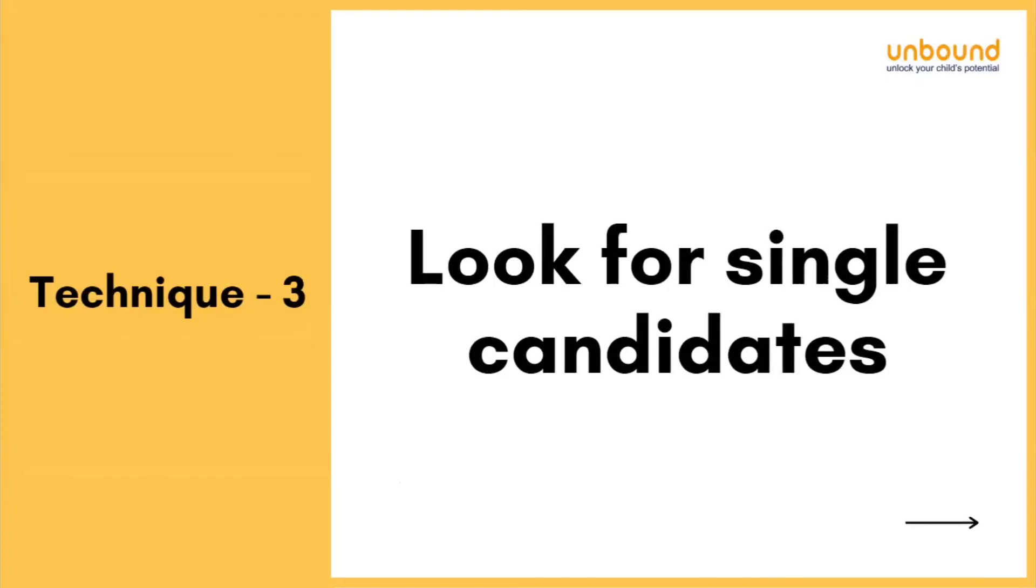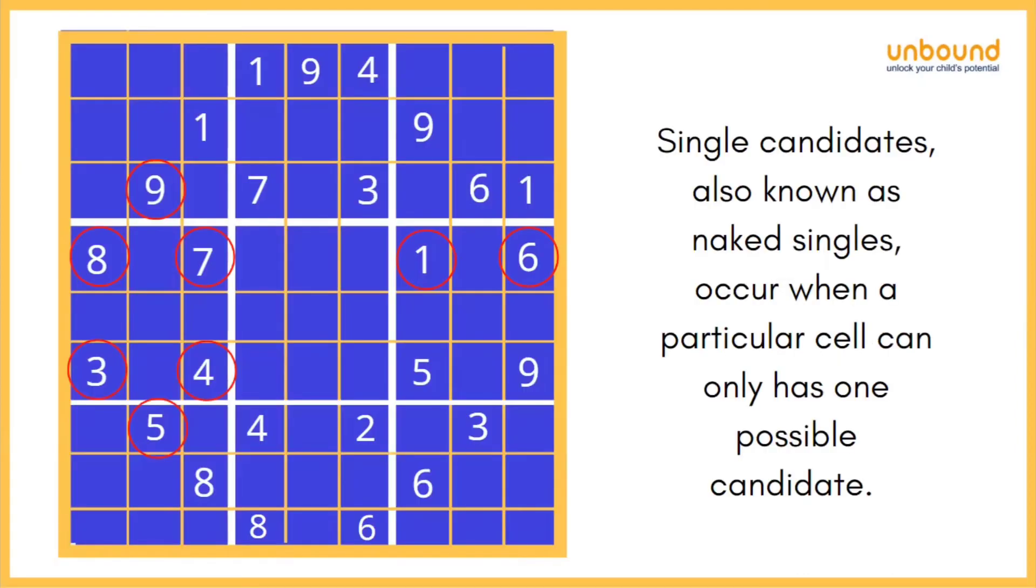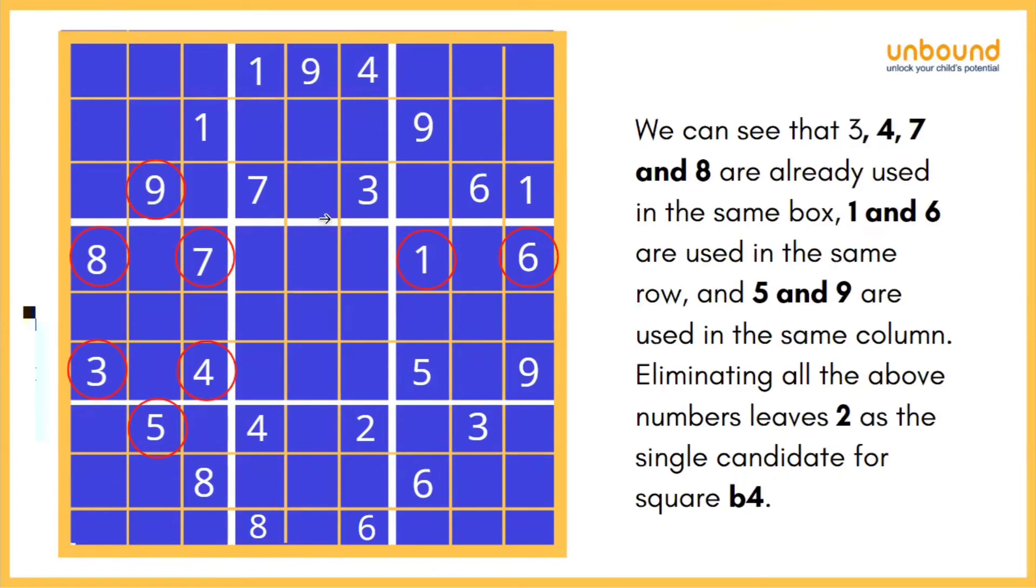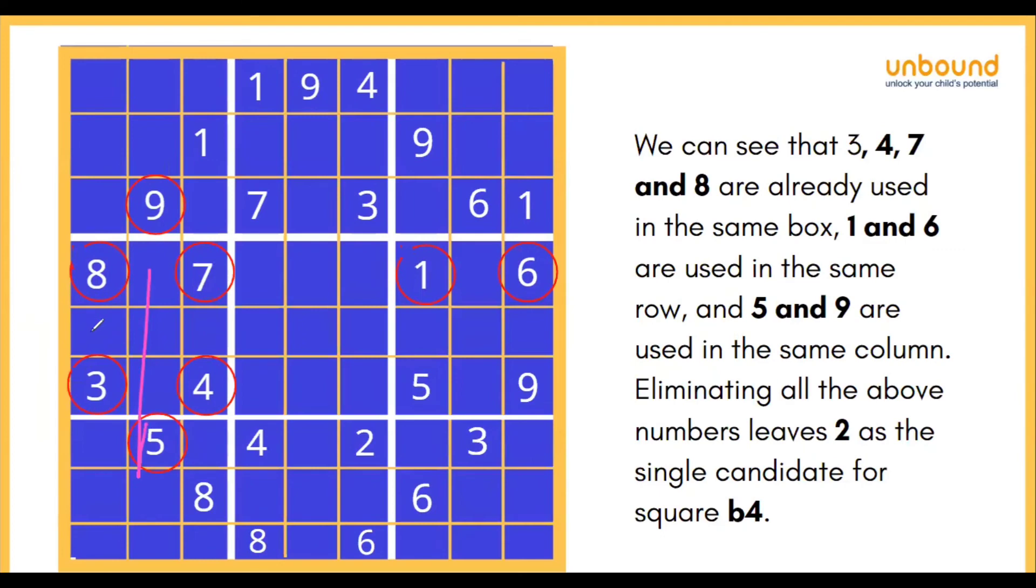Now let's understand the third technique, which is look for single candidates. Now, this technique is very interesting. Basically, what you understand by single candidate—single candidate is also known as naked singles—and these four things are given to you. What you have to find is just these five boxes. How can you find five boxes? Basically, as you can see, one and six are used in the same row, five and nine are used in the same column.